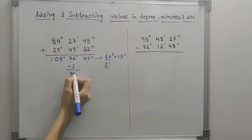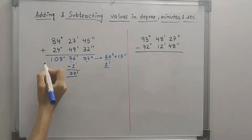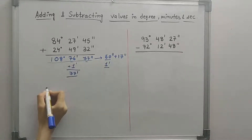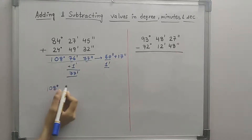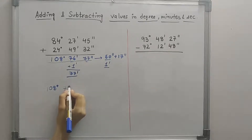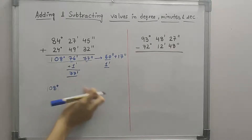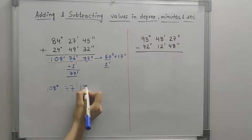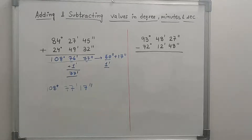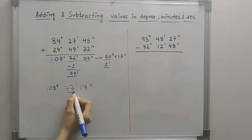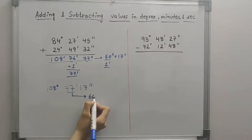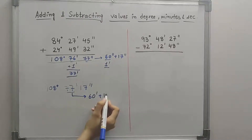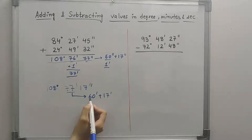That would give us 77 minutes. So this answer can be written as 108 degrees, 77 minutes, and 17 seconds. Now you would notice that 77 minutes is greater than 60, so we have to change this. We know 77 minutes is equal to 60 minutes plus 17 minutes.